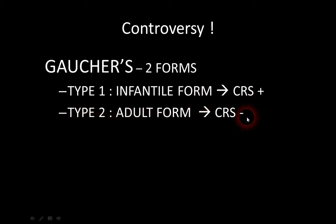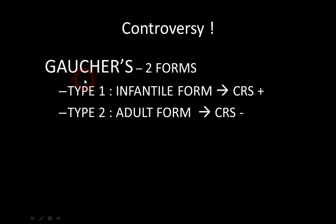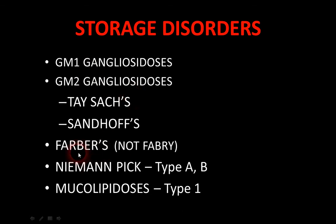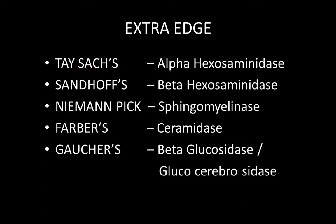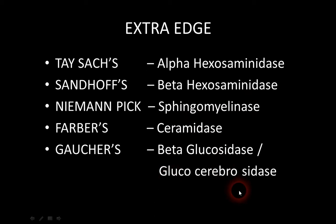There is a controversy regarding Gaucher's disease. Ophthalmology textbooks list it as a differential for cherry red spot, but Nelson's Pediatrics states there is no cherry red spot in Gaucher's. In detail, type 1 — the infantile form — has cherry red spot, but type 2 — the adult form — does not. When Gaucher's appears among options, be careful: if there is an even stronger option, choose that. Study the enzyme deficiencies for each condition carefully, as they are asked repeatedly every year.